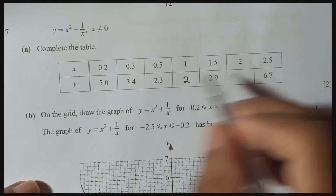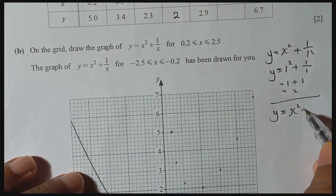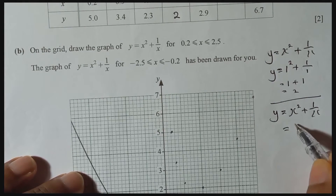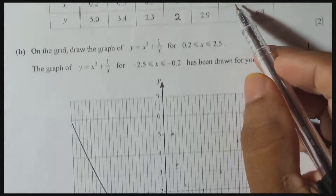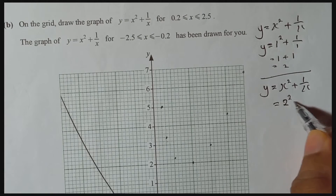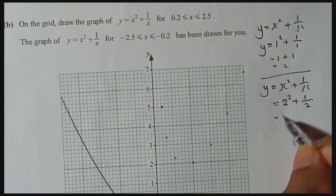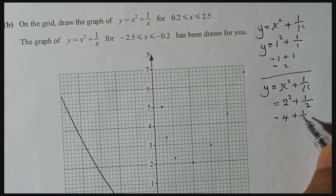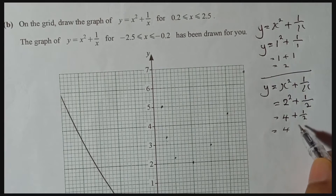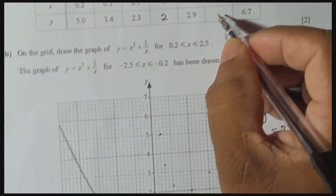Same way, you need to find this for x equal to two. We write the same equation: y equal x squared plus one over x. For x we put two. Two squared means four, and one over two means 0.5. If you add these two together your answer will be 4.5. That's the answer, so here you need to write 4.5.